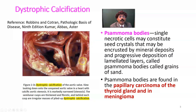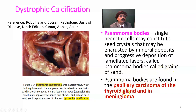We also get psammoma bodies in certain situations in dystrophic calcification. A single necrotic cell may constitute seed crystals that become encrusted by mineral deposits with progressive deposition of laminated layers — called psammoma bodies, also called grains of sand. Psammoma bodies are found in papillary carcinoma of the thyroid gland as well as in meningioma, and also in other organ pathologies, but these are most common.